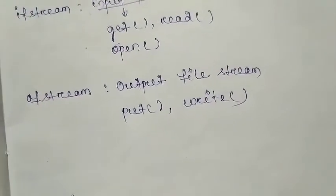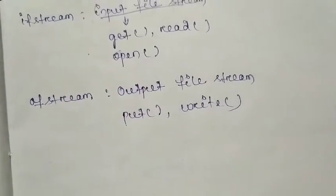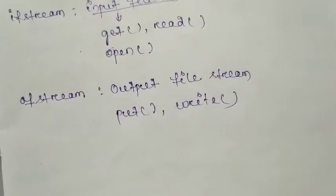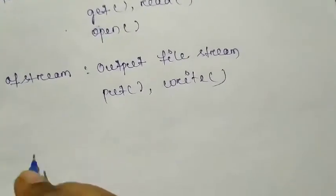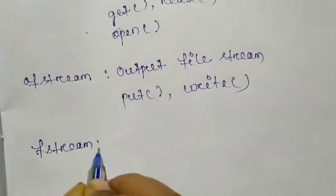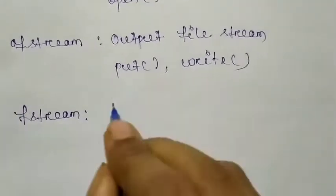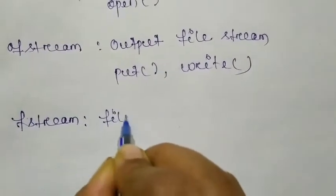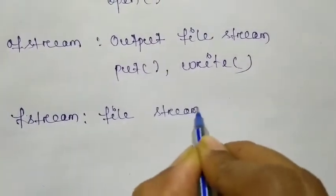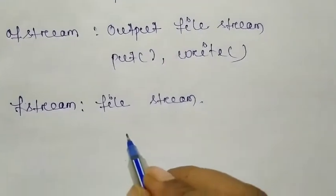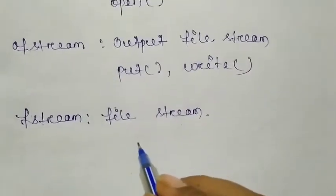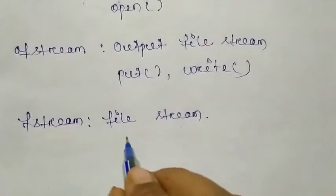Next is the fstream class — fstream stands for file stream. This class allows both input and output operations, basically allowing I/O operations on a file buffer simultaneously.